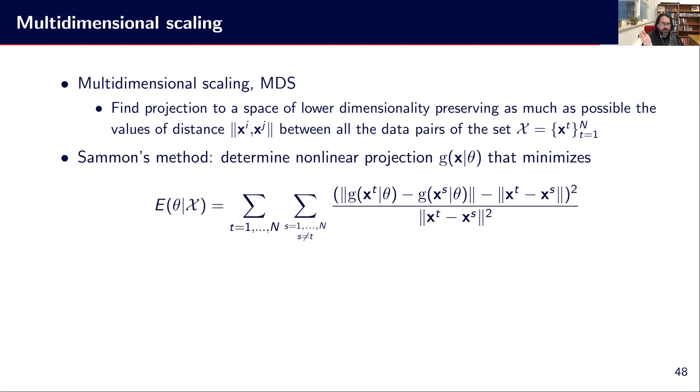So we have different approaches. One is Sammon's method, which aims at determining the non-linear projection g(x|θ) that minimizes this criteria. So basically, the criteria is to say that is to achieve something like the distance. So this is the projection of X^t, this is the projection of X^s. So we have this distance between these two, and we have the distance in the original space. So we want these two distances. So the distance in the transformed space versus the distance in the original space to be minimized. We want this to be called to close as zero as possible. So we have this squared divided by the original distance. So we are kind of weighting this according to the distance we have right now.